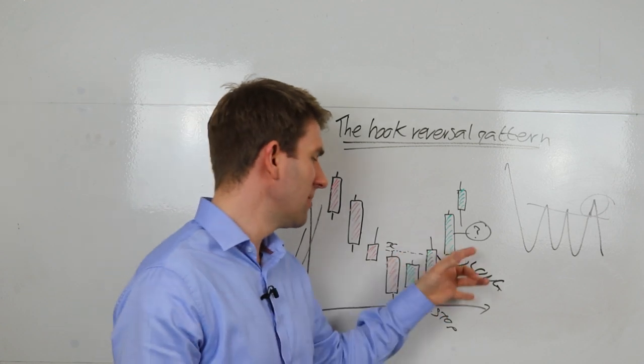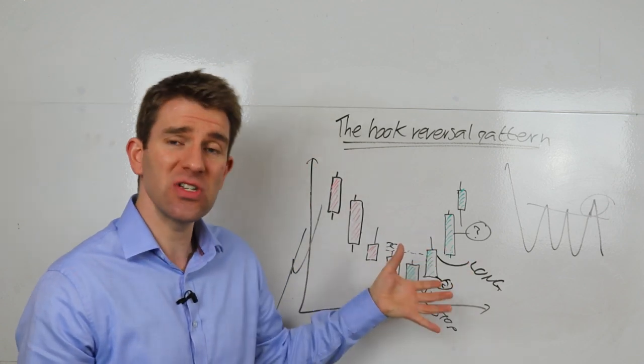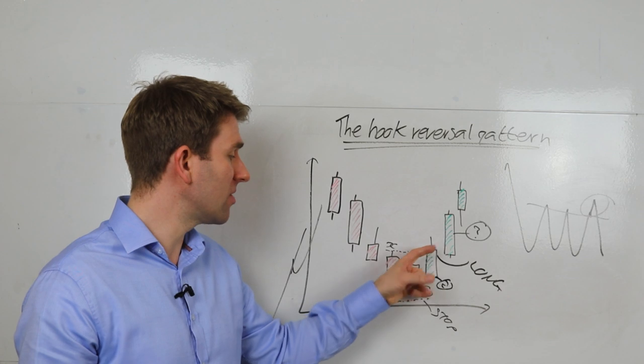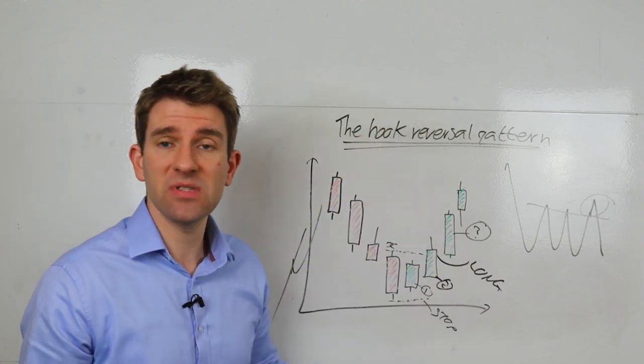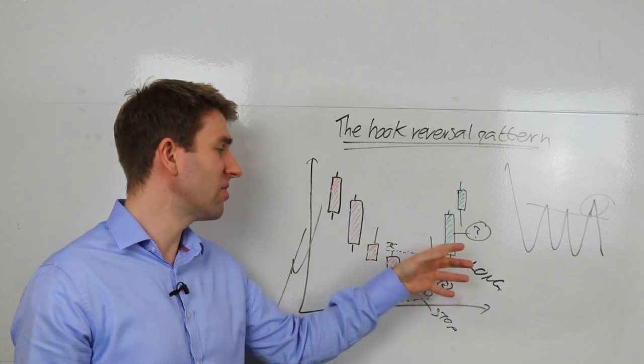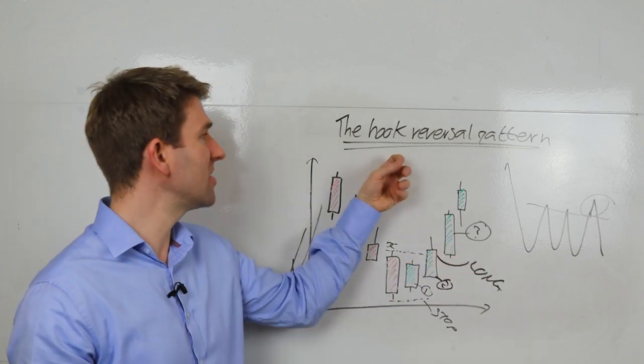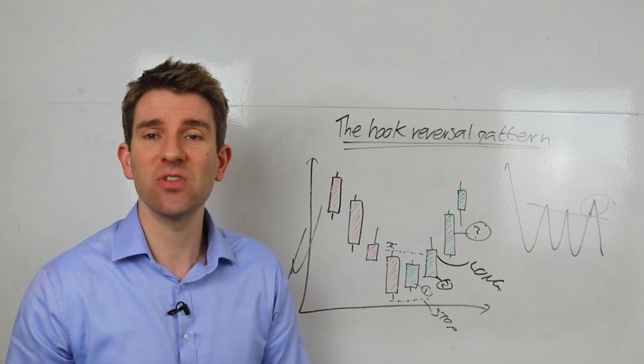But if your risk reward ratio is quite tight which is on this, then you know what, maybe it's worth a go regardless. Because if you can measure that you think, well actually the upside is five or six times that, as a decent risk reward ratio, even if the probability to success of this isn't so high. Anyway guys, that is the hook reversal pattern. Take care, see you next one, bye.